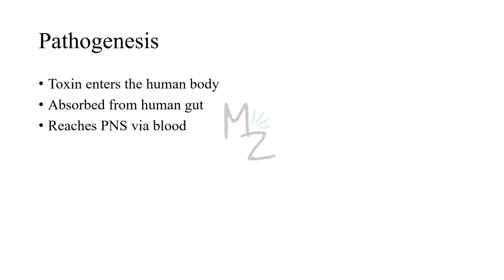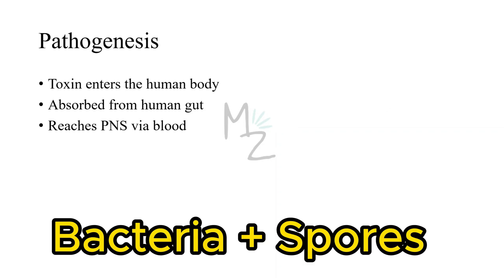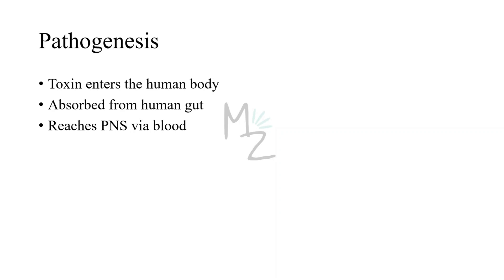Pathogenesis: the first step is the entrance of the toxin into the body, as discussed in transmission. Whether spores or bacteria are ingested, spores germinate into bacteria, and bacteria release the botulinum toxin. The toxin is absorbed from the gut and carried via blood to the peripheral nervous system, where it blocks the release of acetylcholine. The major virulence factor is the botulinum toxin, which is a protease that cleaves a specific protein — the SNARE protein — which plays a critical role in the transfer of neurotransmitters like acetylcholine, enabling neuromuscular activity.